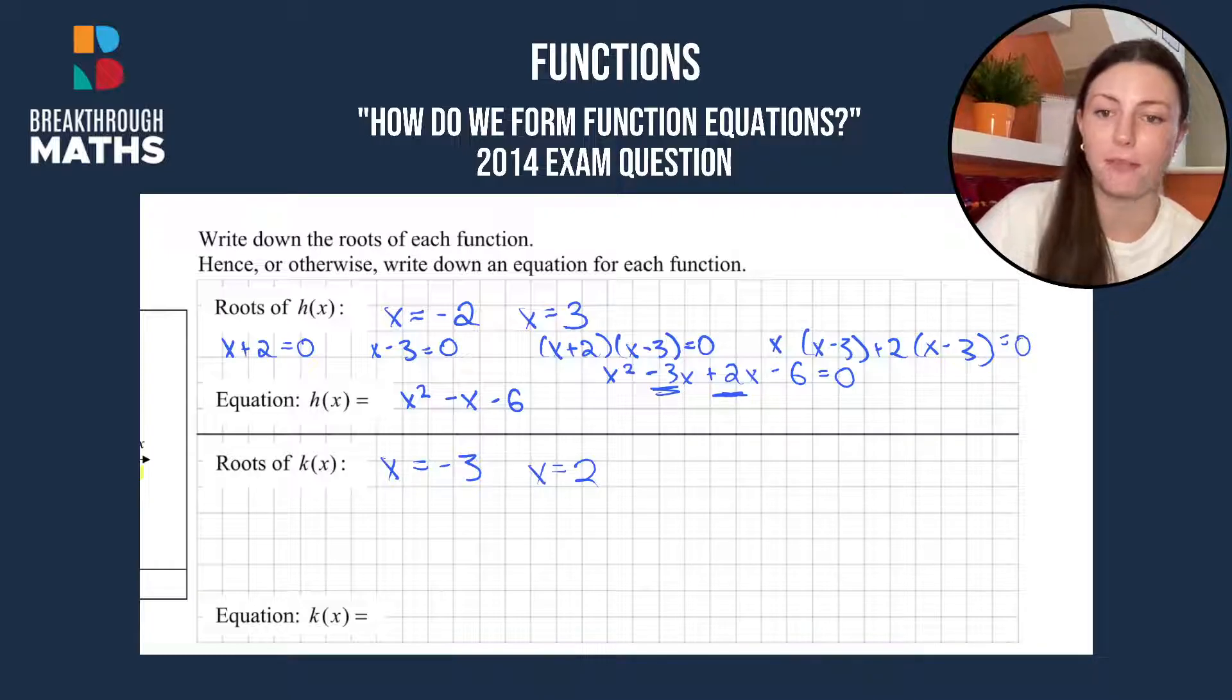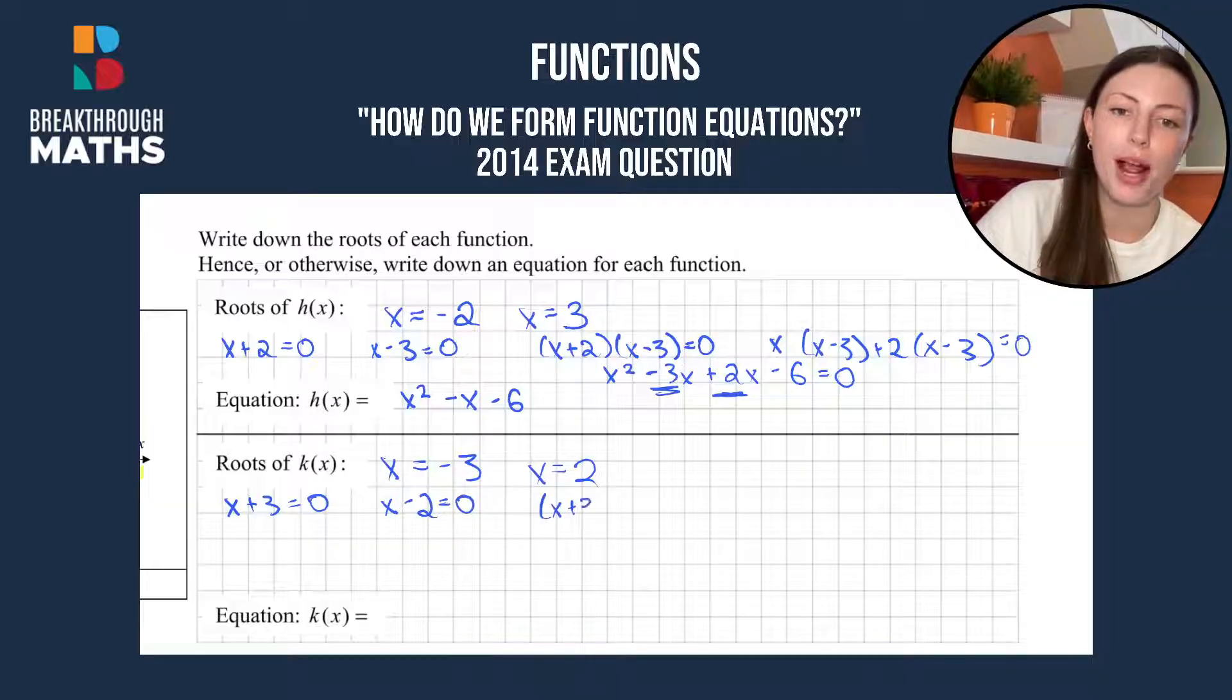On to the next one then. Bringing everything to one side, we'll have x plus 3 equals 0 and x minus 2 equals 0. Again, bundling them up in brackets: x plus 3 and x minus 2 equals 0.